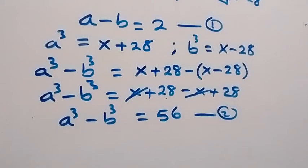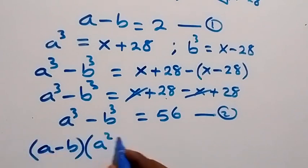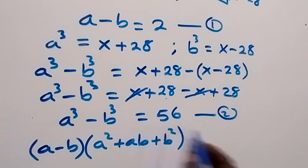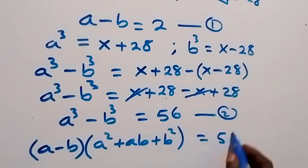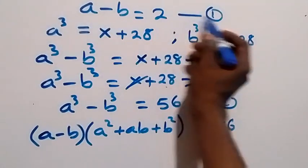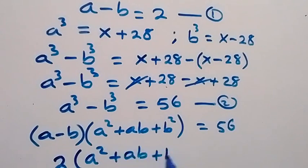On the left-hand side we have the difference of two cubes, which we can write as (a minus b)(a² + ab + b²) equals 56. From equation 1, a minus b equals 2, so we have 2 times (a² + ab + b²) equals 56.